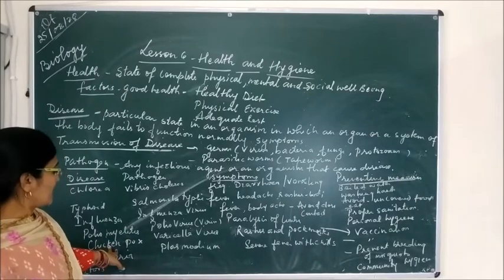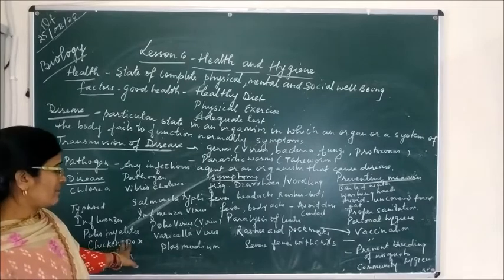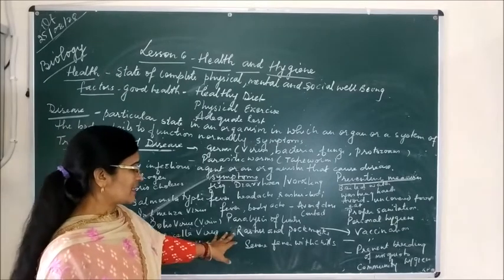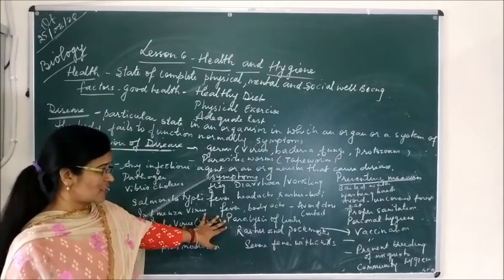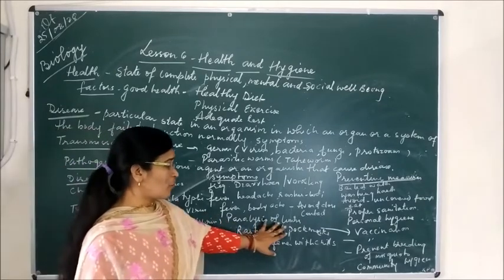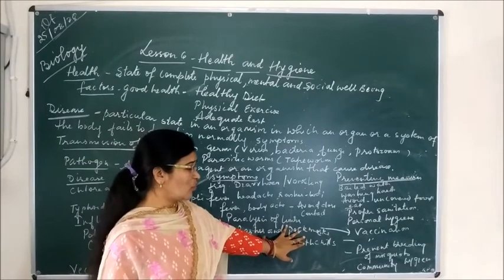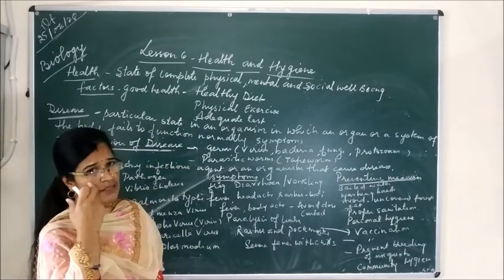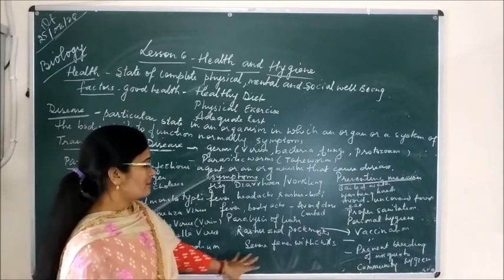Another type of disease is chickenpox, which is caused by the varicella virus. The symptoms include rashes and pockmarks on the abdomen and the whole body, especially on the limbs and hands. This disease can also be prevented by vaccination.